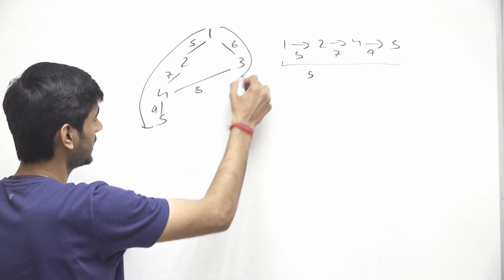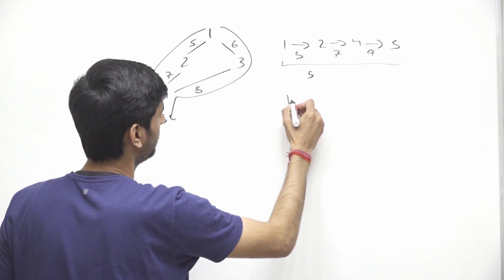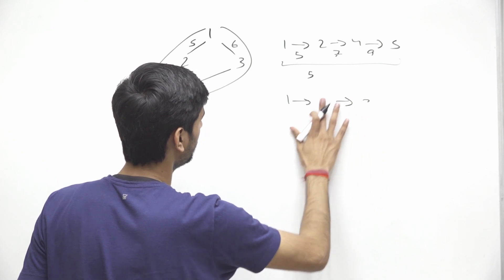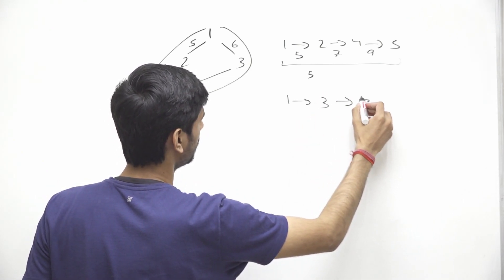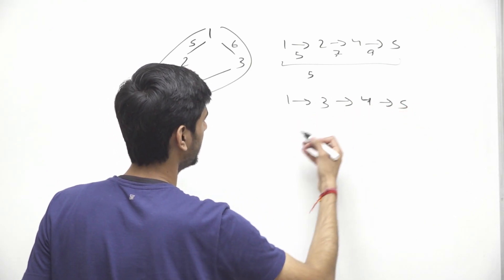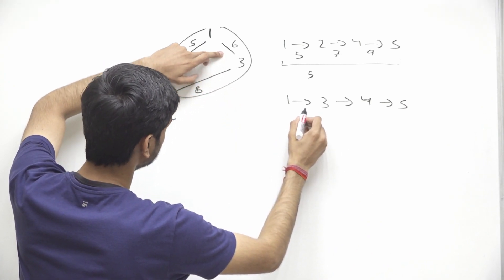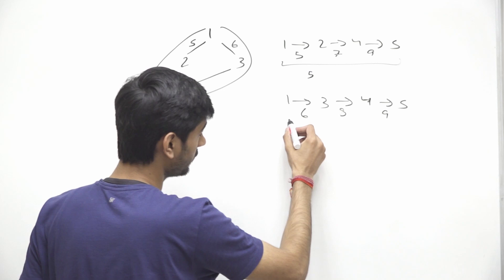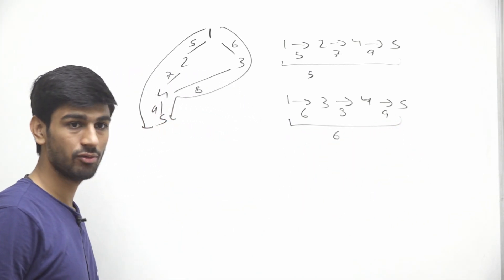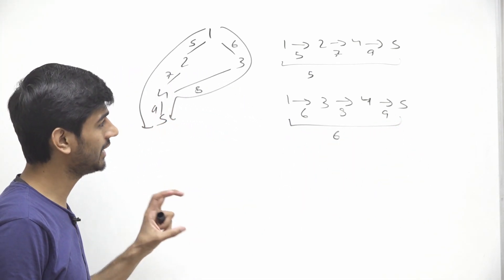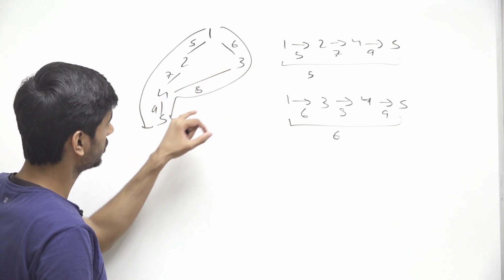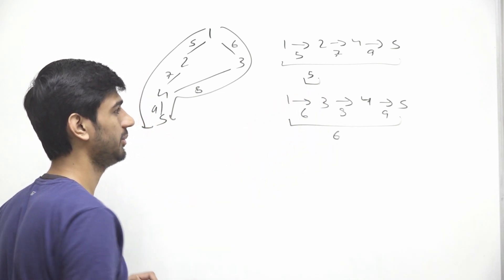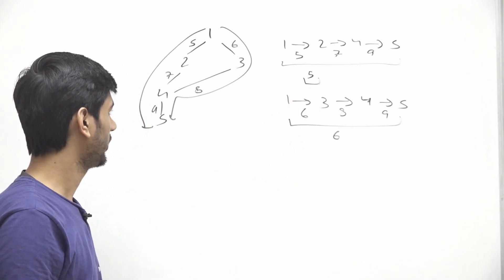Now if you just consider this second path, then this path will be 1 to 6, then 6 to 3. Oh sorry, 1 to 3, then 3 to 4, then 4 to 5. So the weight of this edge is 6, then the weight of this edge is 8, then the weight of this edge is 9. So the score of this path will be 6. And we have to find out the minimum score of any path between 1 to n. So the minimum score will be 5, not 6. So in this case, 5 will be the answer. So this is the problem statement.